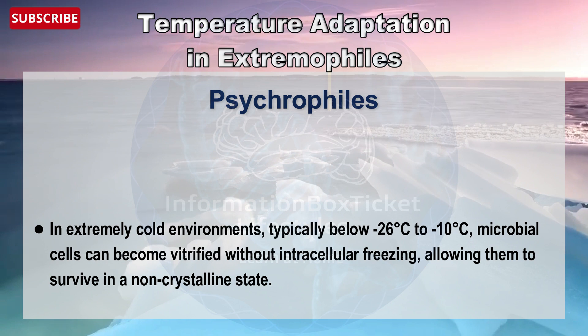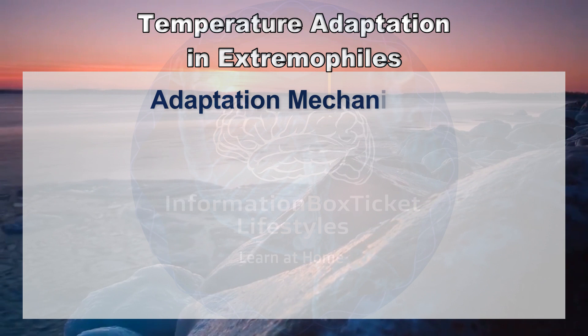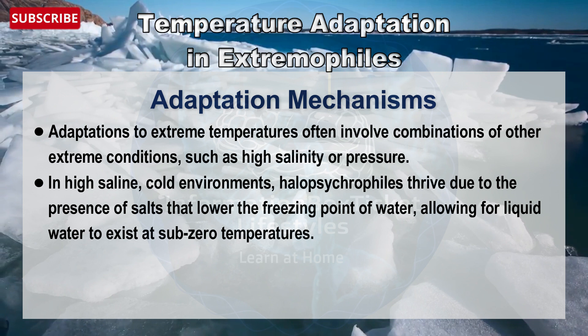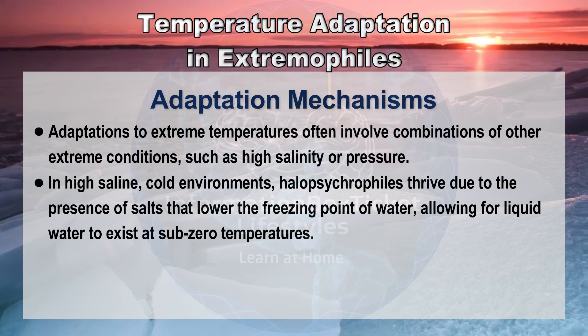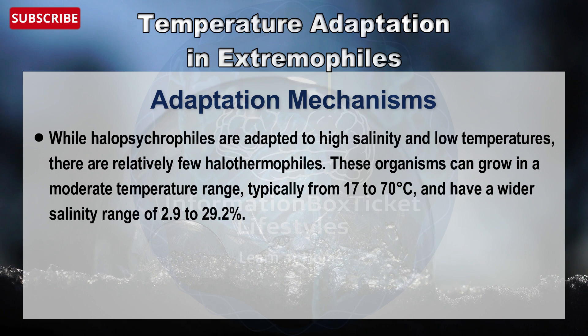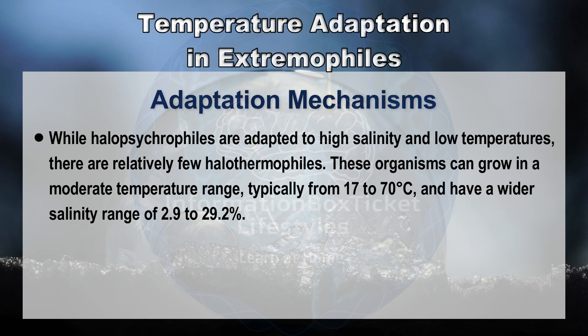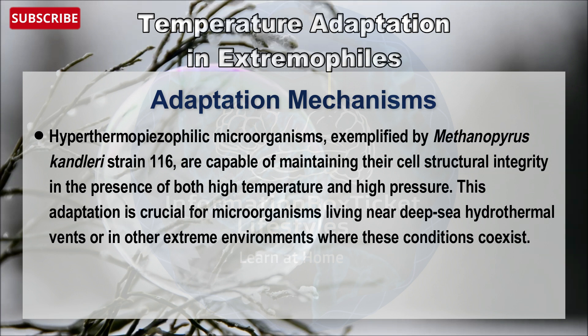Adaptations to extreme temperatures often involve combinations of other extreme conditions such as high salinity and pressure. In high-saline cold environments, halo-psychrophiles thrive due to the presence of salts that lower the freezing point of water, allowing liquid water to exist at sub-zero temperatures. There are relatively few halo-thermophiles; those that exist can grow in a moderate temperature range of 17 to 70 degrees Celsius with a salinity range of 2.9 to 29.2 percent. Hyperthermophilic microorganisms, exemplified by Methanopyrus kandleri strain 116, are capable of maintaining structural integrity in the presence of both high temperature and high pressure — crucial for organisms living near deep-sea hydrothermal vents.